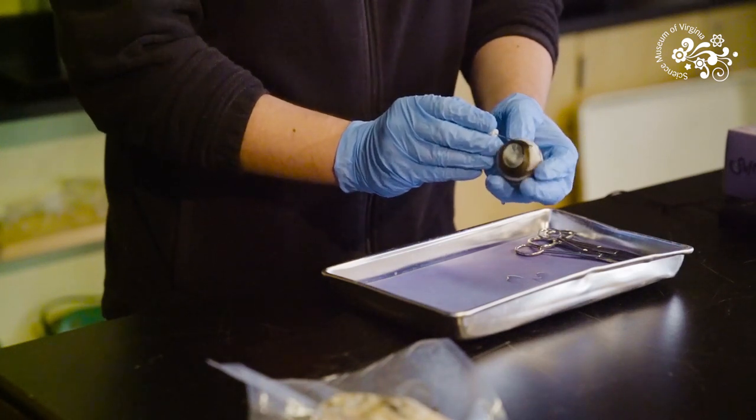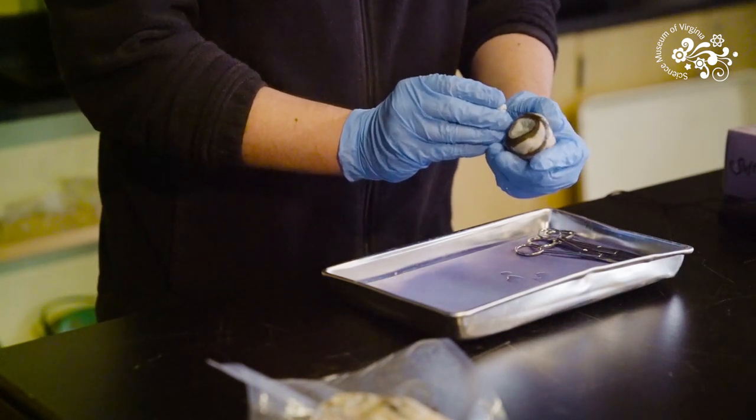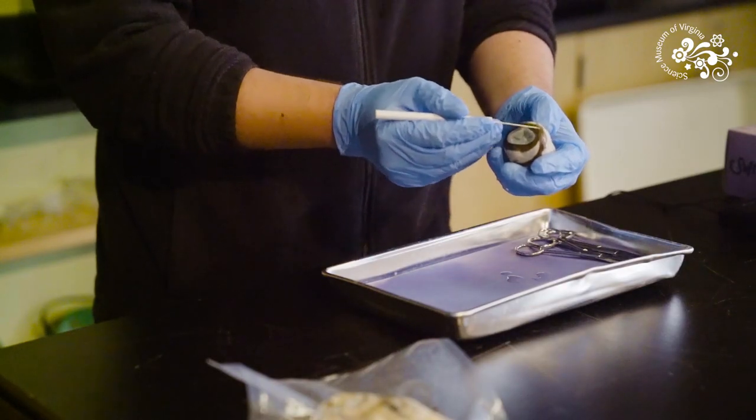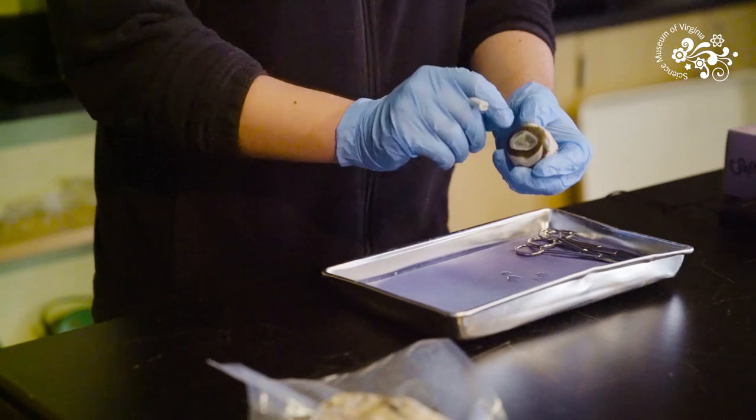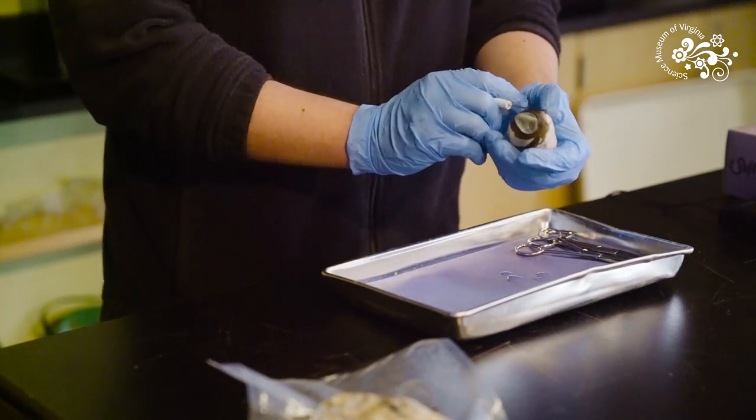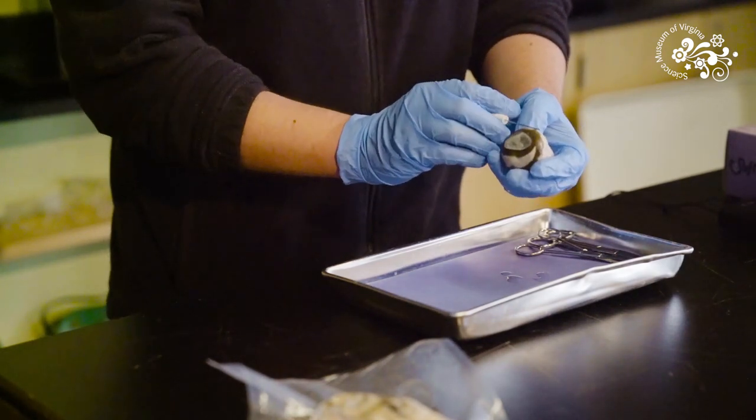Around the side of the eye, this part here is the sclera, which is pretty much like the white of your eye, though some animals have more pigment in their sclera than we do. This is really tough leathery tissue and is what we'll have to cut through to reach the inside parts of the eye.